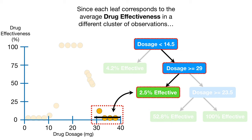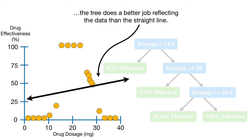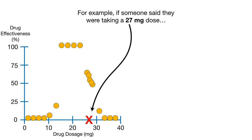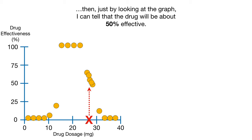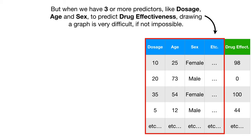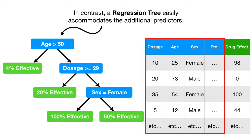Since each leaf corresponds to the average drug effectiveness in a different cluster of observations, the tree does a better job reflecting the data than the straight line. You might be thinking: I can predict drug effectiveness just by looking at the graph. When the data are simple and we are only using one predictor, dosage, to predict drug effectiveness, making predictions by eye isn't terrible. But when we have three or more predictors, like dosage, age, and sex, drawing a graph is very difficult, if not impossible. In contrast, a regression tree easily accommodates the additional predictors.